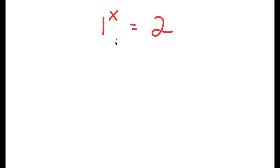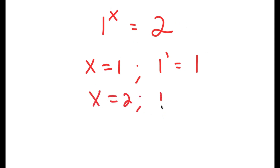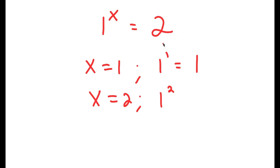In this video, I'm going to solve the equation 1 to the power of x is equal to 2. Before we even start solving this, if x is equal to 1, then 1 to the power of 1 is equal to 1. If x is equal to 2, then 1 to the power of 2 is also equal to 1. Even 1 to the power of 10 is still equal to 1. So you may be thinking: what possible value of x can make 1 to the power of x equal to 2?